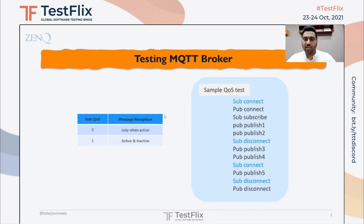In this example test, I'll connect the subscriber and publisher to the broker, publish a few messages, disconnect the subscriber and publish a few more messages, then reconnect the subscriber and publish again. With QoS zero, messages published while the subscriber was disconnected should not be received. With QoS one, those messages should be received by the subscriber.